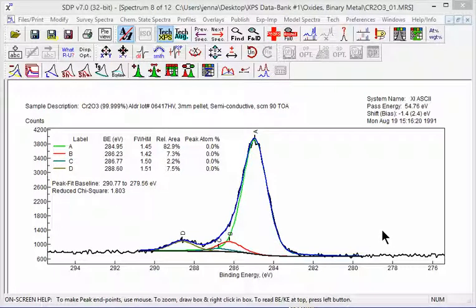But for most compounds like chrome oxide, polymers, silicon dioxide, almost anything you could think of that are true compounds or chemicals, the peak widths range from one to one and a half.